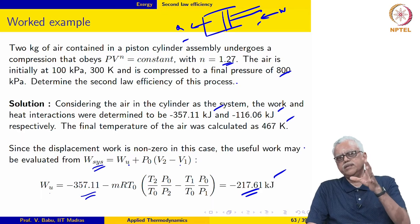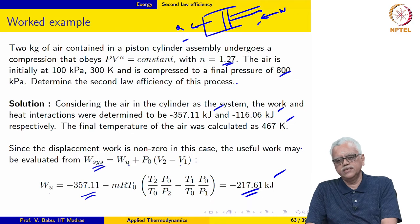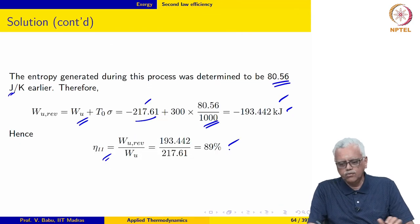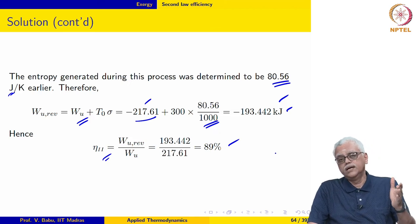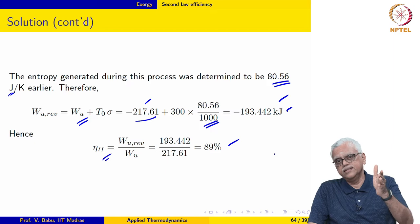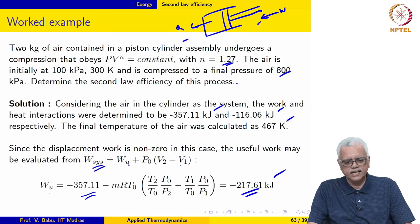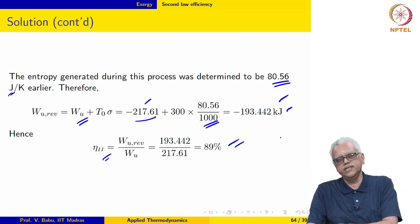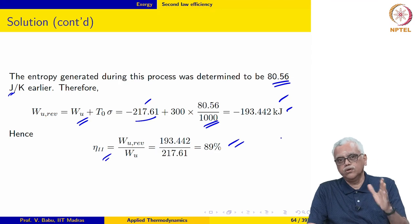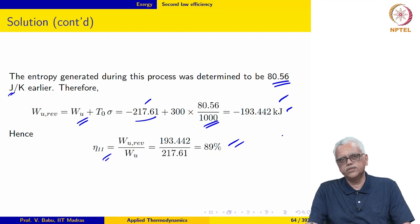If you have a device and you are thinking of compressing air using this sort of arrangement, you now have an idea of what the second law efficiency for this process is. Alternatively, if you are looking at several different choices or strategies for compressing air from 100 kPa to 800 kPa, an analysis like this will allow you to calculate the second law efficiency and select the best design from among the choices you are considering.